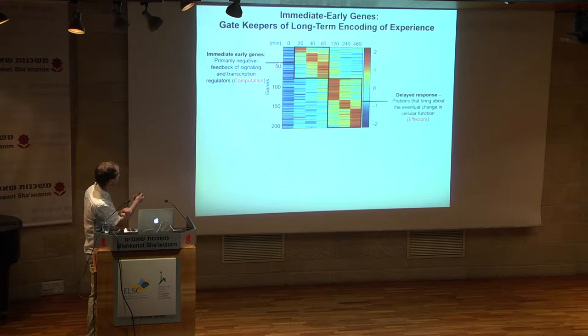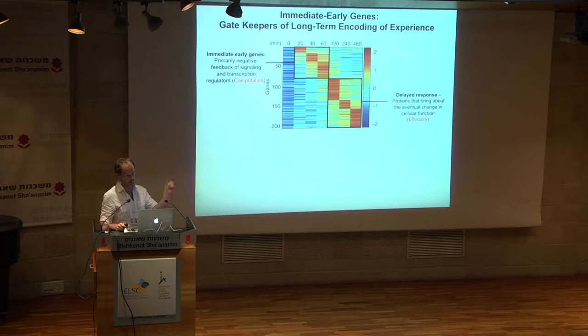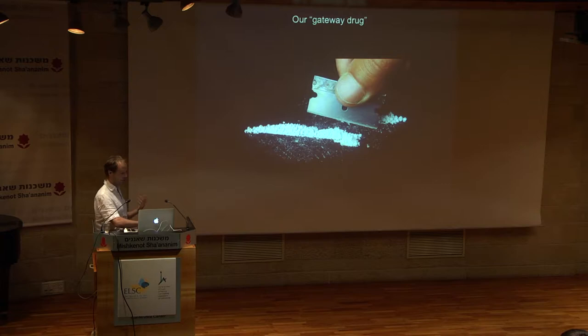If we take this approach, we can look only at these immediate early genes and think of them as gatekeepers of the encoding of the phenomena that the brain or cell is looking to encode. That's the approach we're going to be taking. We're funneling now to the rest of the talk—we'll be discussing this early component of immediate early genes.